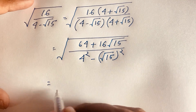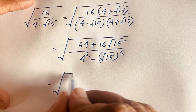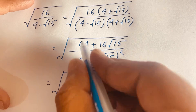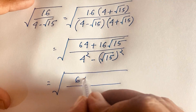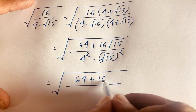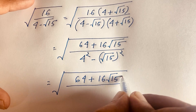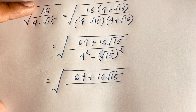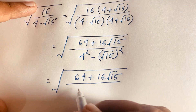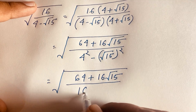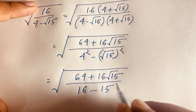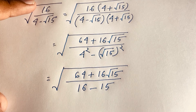So we have square root of 64 plus 16 square root 15. In the denominator, 4 to the power 2 is 16, and square root 15 squared is 15, so 16 minus 15 equals 1.